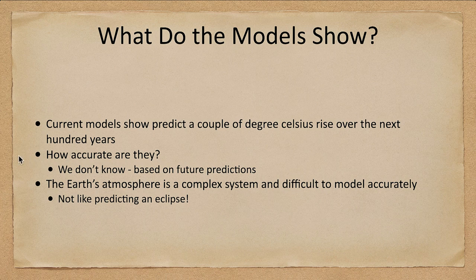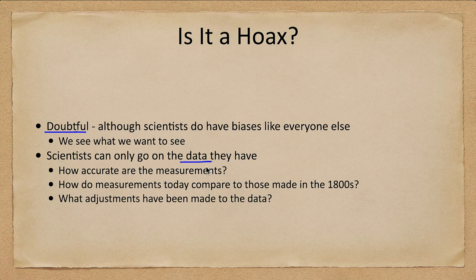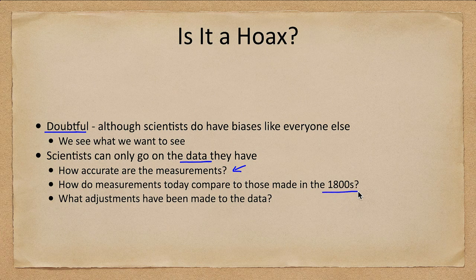Is this a hoax? That's really doubtful. Scientists do have biases like everyone else — we see what we want to see. If something agrees with our beliefs we tend to accept it, and if it doesn't, we look for other explanations. Scientists can only go by the data they have. How accurate are these measurements? That's a good question — observations have changed over the last 150 years, and technology has improved our ways of measuring temperatures.